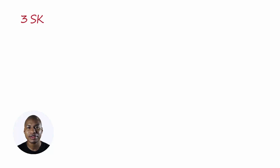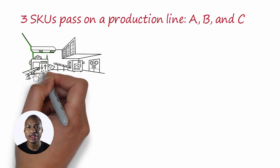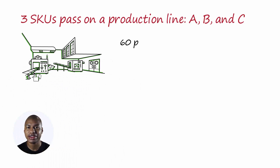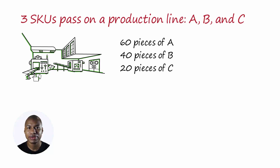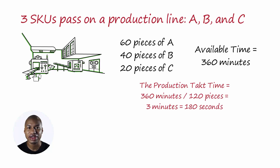For example, 3 SKUs pass on a production line: A, B, and C. The customer's request is 60 pieces of A, 40 pieces of B, and 20 pieces of C. The available time is 360 minutes. The production TACT time is 360 minutes over 120 pieces, equal to 3 minutes, or 180 seconds. This means that every 180 seconds, a customer comes to the gate of the production line to pick up a purchased piece — A, B, or C.